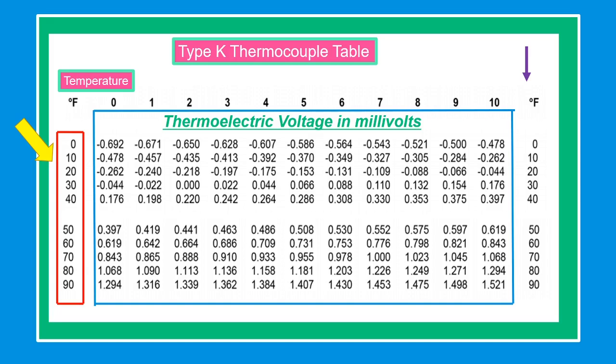Now, let's proceed to our thermocouple chart. In the left-hand column that I marked, the temperatures can be either degree Celsius or degree Fahrenheit and it is tens or hundreds. On the top horizontal numbers from 0 to 10, these are ones for temperatures to be accurate.